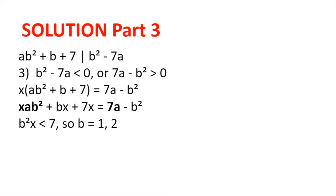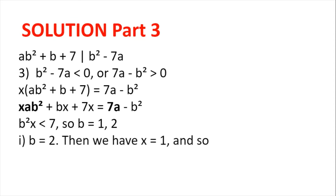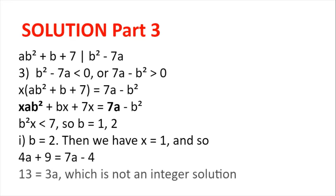For b = 2: we need x = 1 since 4x must be less than 7. Substituting gives 4a + 9 = 7a − 4, or 13 = 3a, which gives no integer solutions.